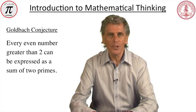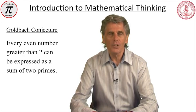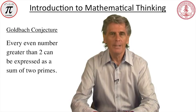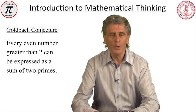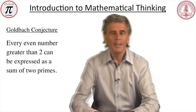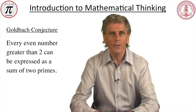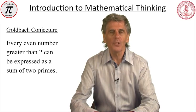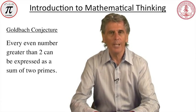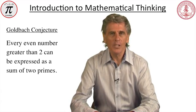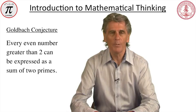Most mathematicians believe the Goldbach conjecture to be true, but it's not yet been proved. All it would take to disprove it would be to find a single even number n for which no two primes sum to n. Mathematicians don't regard it as particularly important — it has no known applications or significant consequences within mathematics. It's become famous solely because it's easy to understand, was endorsed by Euler, and has resisted all attempts at solution for over 250 years.